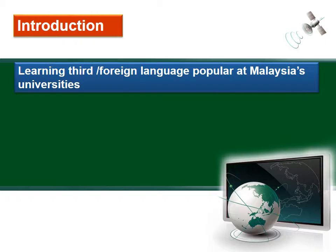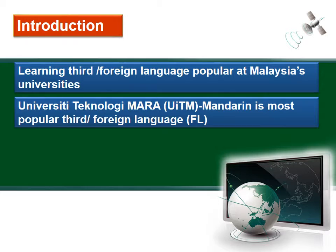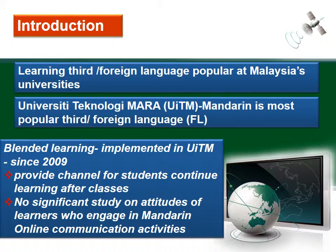Introduction. Learning a third or foreign language is popular at Malaysian universities. University Technology Mara, UITM, is one of the public universities where Mandarin is the most popular third or foreign language. Blended learning has been implemented in UITM since 2009, providing channels for students to continue learning Mandarin after classes. However, there are no significant studies on attitudes of learners who engage in Mandarin online communication activities.